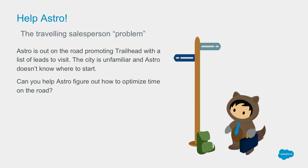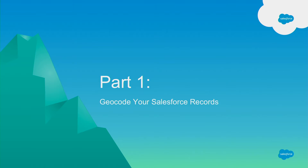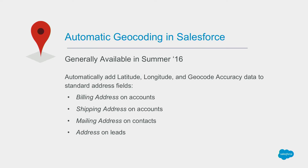But how do I get those geocodes into Salesforce? This used to take third-party APIs, a lot of integration work, and a lot of headache. Today you can do this natively in Salesforce — automatic geocoding was generally available as of the Summer '16 release. This feature appends geocode data — latitude, longitude, and the geocode accuracy code — to standard address fields on accounts, contacts, and leads. This feature is provided by data.com, but you do not need a data.com license to use it. It's included with your Sales or Service Cloud license, and also included in developer orgs.